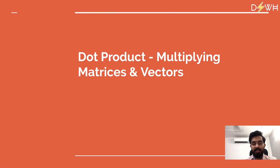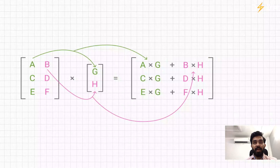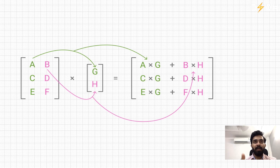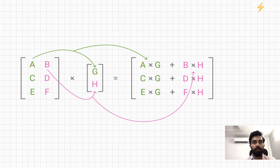The dot product is a very important concept in linear algebra and also plays a very important role in machine learning as well as in data science. When we talk about multiplying matrices or multiplying a matrix with a vector, what we're actually doing is not simply multiplying the individual components — we are calculating the sum of the products between the rows and the columns.